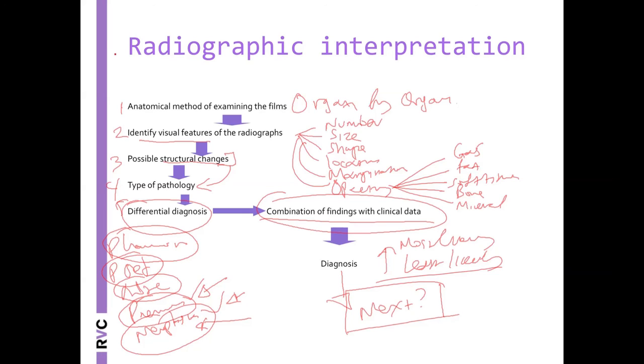And when you come to radiopacity, avoid saying opaque. Be specific. Gas, fat, soft tissue, bone, or mineral. We said fluid is soft tissue. So I hope all of you who listen to that now, you're not going to say fluid opacity. You can say soft tissue opacity. Then think structurally. What has changed? And usually it boils down to fluids or cells or a combination of the two. That will lead you to the type of pathology. And that will allow you to make your first differential diagnosis.